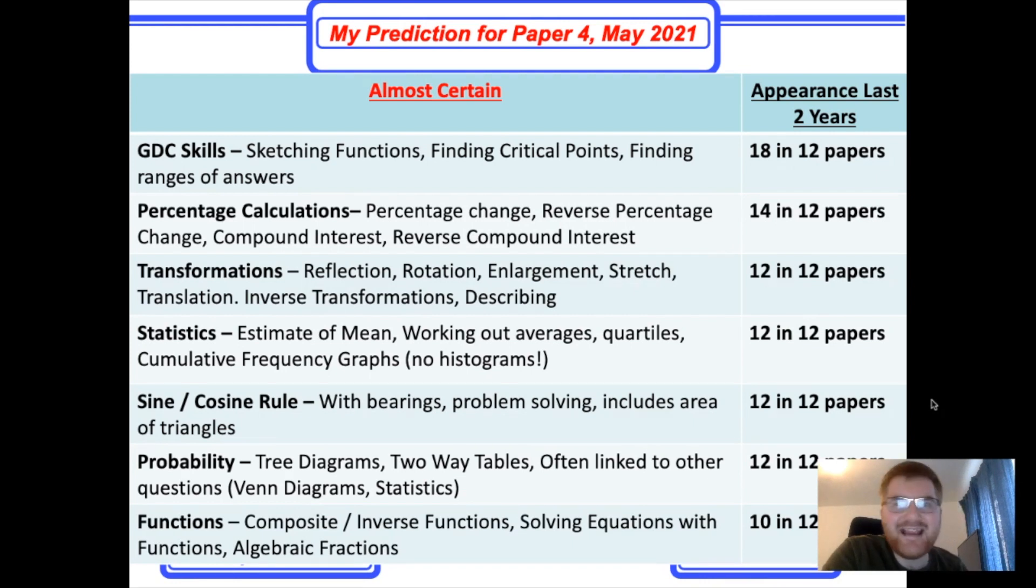As you can see, it's a whopping 18 in 12 papers. That is 1.5 questions per paper because often there are two questions. And I've even separated regression lines into a separate topic, so keep that in mind.